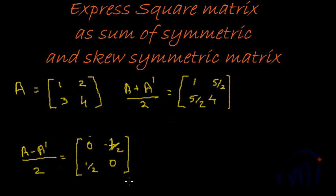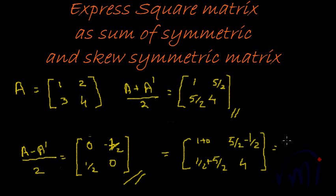Now, if we add the skew symmetric and symmetric part, we get 1 plus 0, 5 by 2 minus 1 by 2, 1 by 2 plus 5 by 2 and 4 which is equal to 1, 4 by 2 would be 2 and this would be 3 and this would be 4.